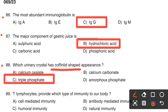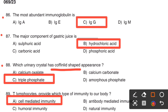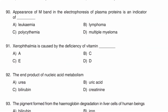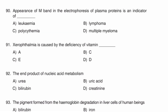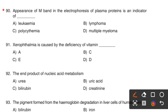Question number 89. T-lymphocytes provide which type of immunity to our body? Option A, Cell mediated. Option B, Antibody mediated. Option C, Humoral. Option D, Natural immunity. The right answer is Option A, Cell mediated immunity. T-cells provide cell mediated immunity.